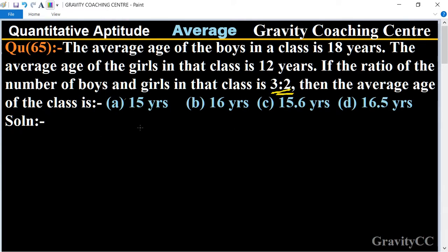So in this question, the average age of the boys is given as 18 years and average age of girls is 12 years, and the ratio of the number of boys and girls is 3 to 2.